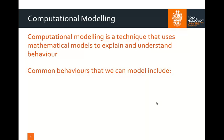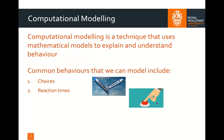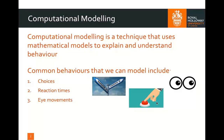A few common behaviors that we usually model include binary choices — so whether or not we choose stimulus A or B — reaction times, so how quickly someone reacts to something, or eye movements, so this can be gaze time or anti-saccadic movement. As you can see from these examples, we typically model behaviors that are task-based, something that involves participants doing something. So something to be mindful of if you choose to look into this methodology is that it's particularly focused on behavioral paradigms.